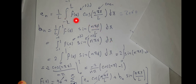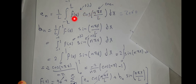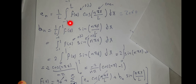For aₙ, the integrand is f(x) times cos(nπx/l). Since f(x) is odd and cosine is an even function, the product odd × even is odd. The integral of an odd function over a symmetric interval from negative l to l equals zero, so aₙ equals zero.